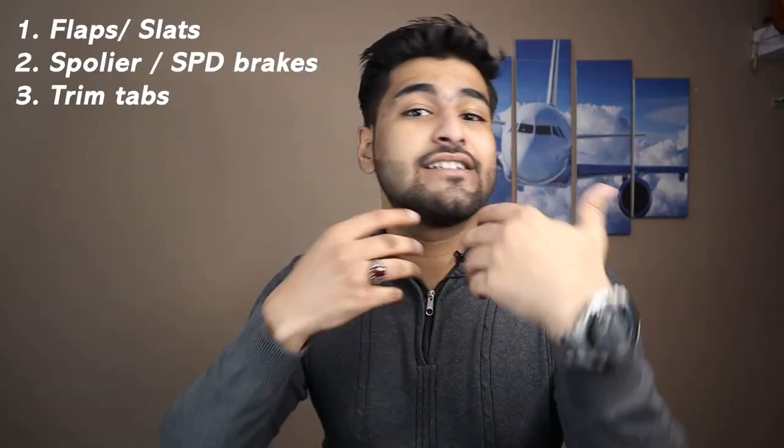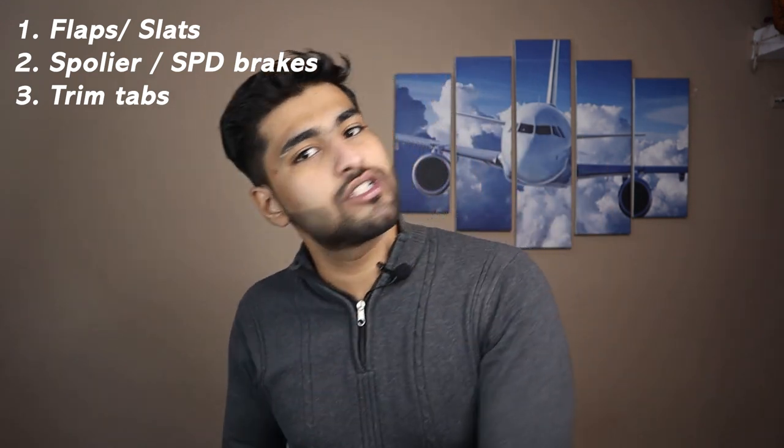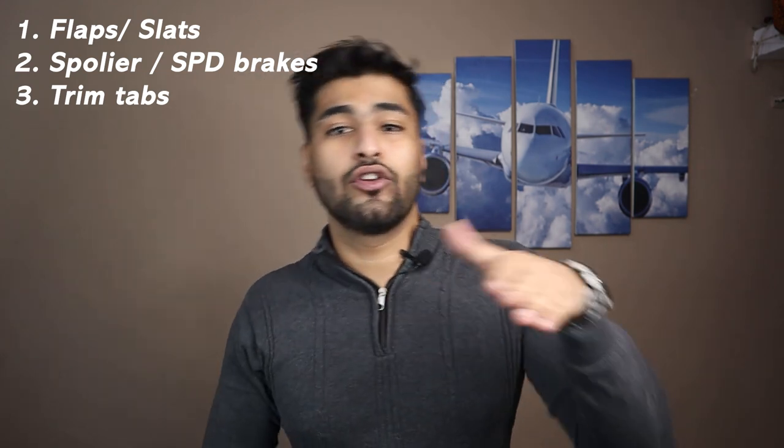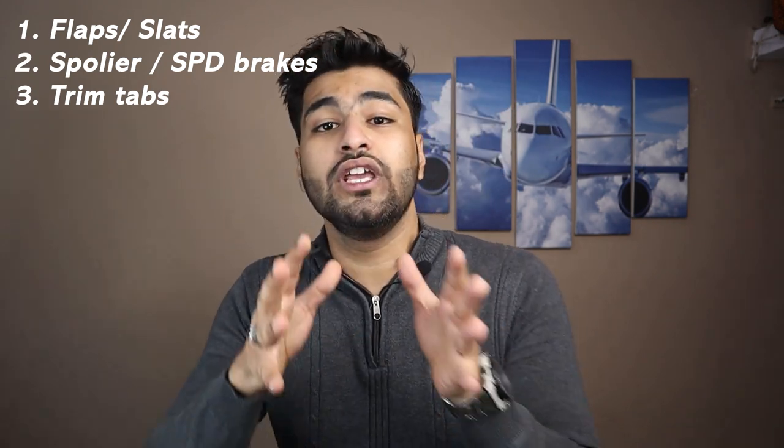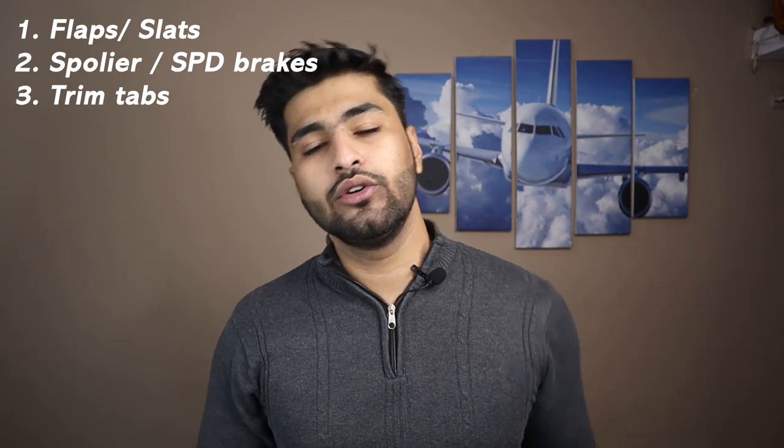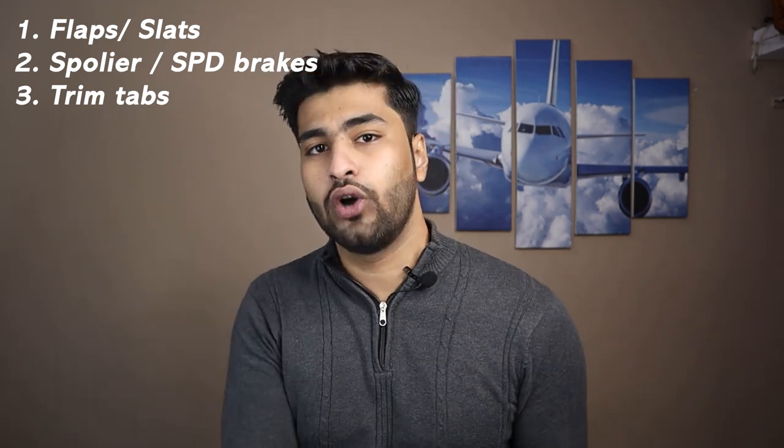So those are the three secondary flight control surfaces: flaps and slats — high-lift devices used for landing and takeoff; spoilers or speed brakes — used to assist roll, slow the aircraft in the air, and reduce landing distance after touchdown; and trim tabs — used to relieve control forces so the pilot doesn't have to physically hold the controls during extended climbs or descents.